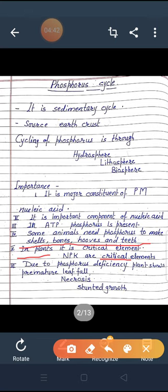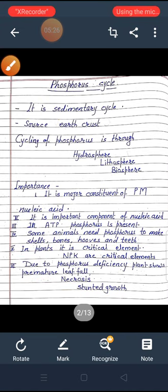Then the next important point: why is phosphorus important in plants? Phosphorus is a critical element. Critical means most important. Without it, we cannot imagine the growth, development, and survival of any plant. That's why it is called critical. The other two critical elements are nitrogen and potassium. Phosphorus deficiency in plants causes premature leaf fall, poor development, necrosis which means brown patches on fruits and leaves, and stunted growth. In human beings, our bones and teeth become weak because of phosphorus deficiency.